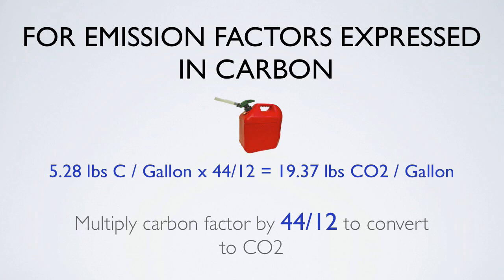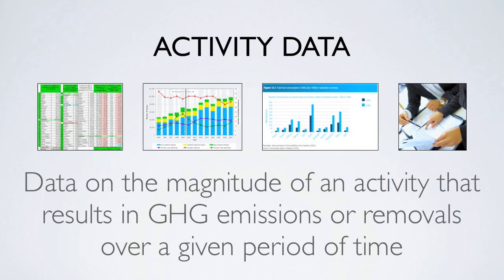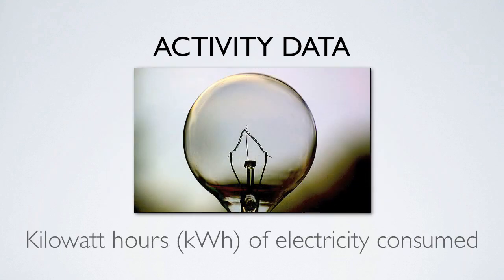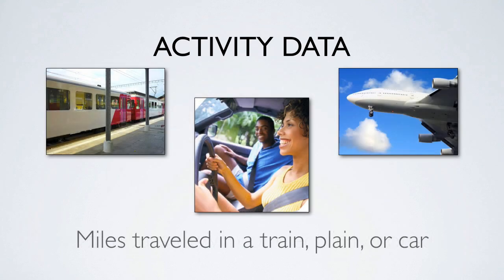Emission factors are used to estimate greenhouse gas emissions based on activity data. Activity data is defined as data on the magnitude of an activity that results in greenhouse gas emissions or removals over a period of time. Basically, activity data is used to quantify an activity such as energy use or employees' business trips, for example. Activity data can be expressed in many different units and are found in both metric and English — for example, cubic feet of natural gas consumed, kilowatt-hours of electricity consumed, miles traveled in a train, plane, or car, or the conversion of limestone into cement.